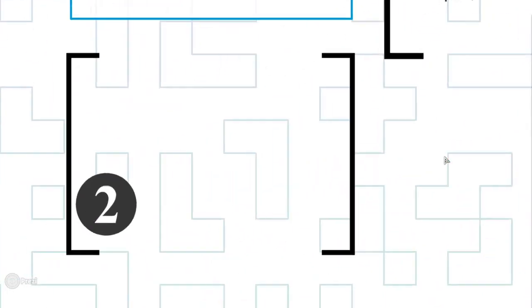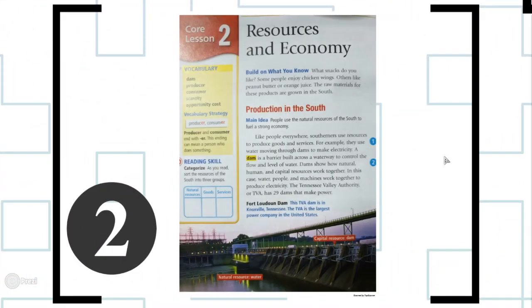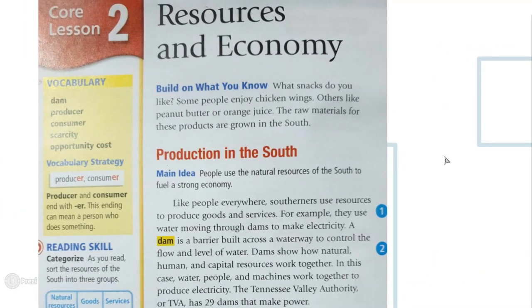Our topic for today is resources and economy of the southern USA. The vocabulary words you're going to learn today are: dam, producer, consumer, scarcity, and opportunity cost. We will be focusing on these vocabulary words throughout the lesson.